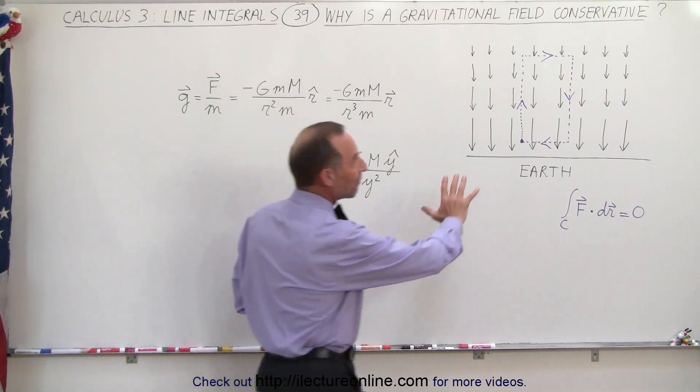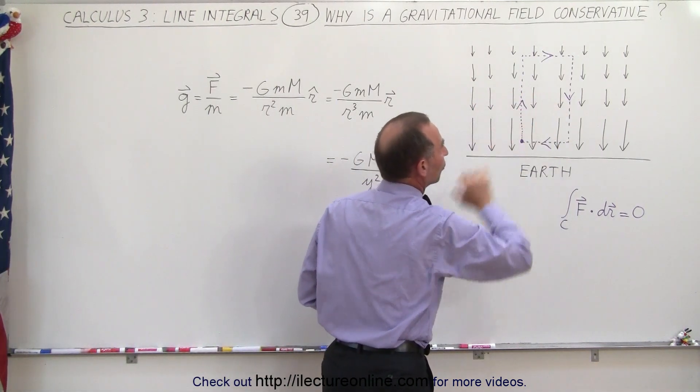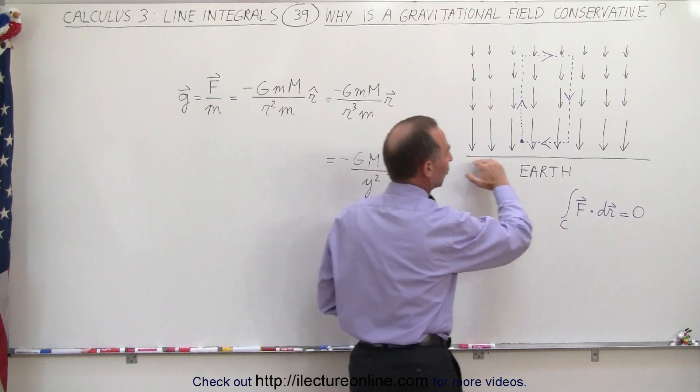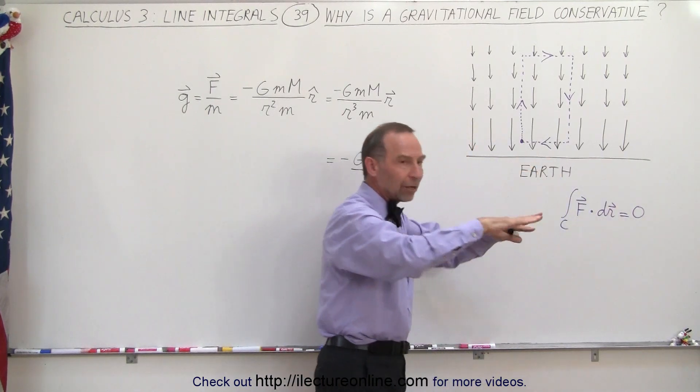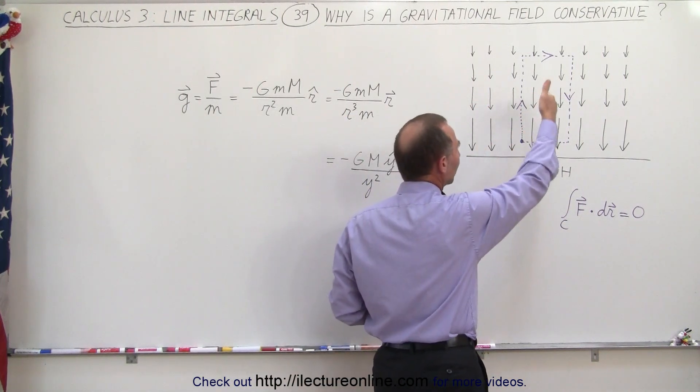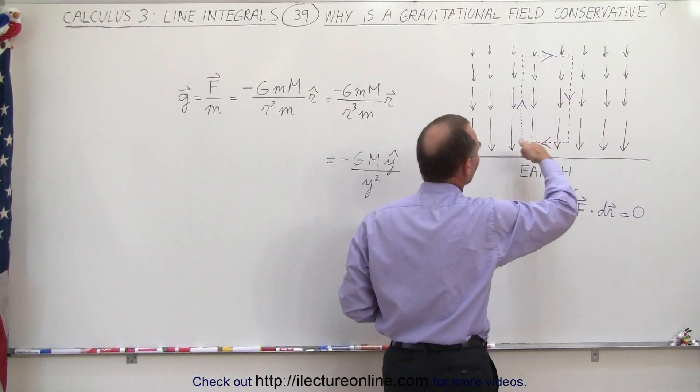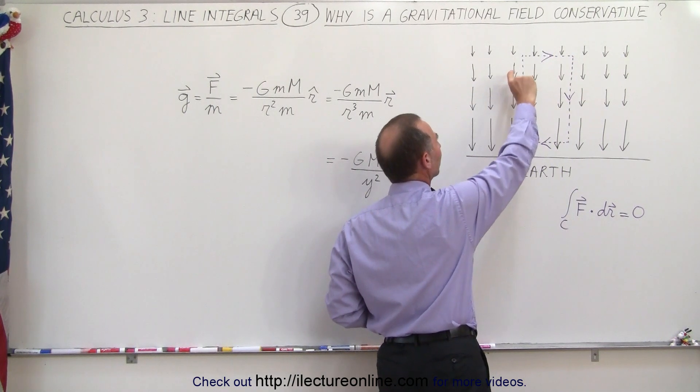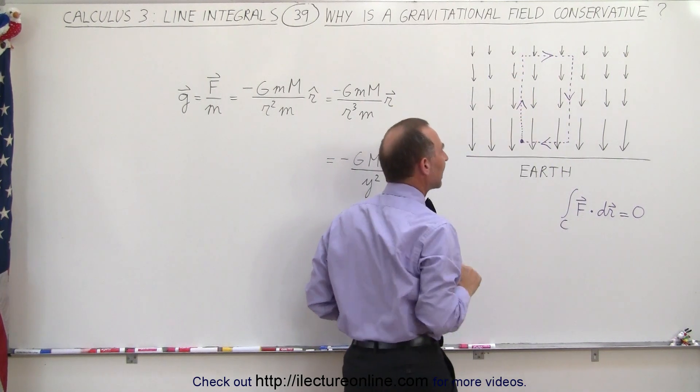Here we have a graphical picture of what a gravitational field looks like. If this is the surface of the earth, and we take a certain portion of it so it looks flat for a small portion, we can see that the arrows represent the gravitational field. The farther away from the earth you are, the weaker the field gets; the closer, the stronger it gets.